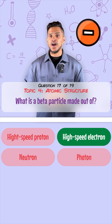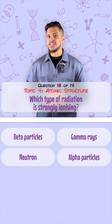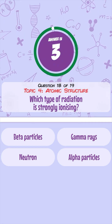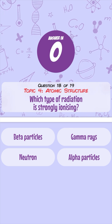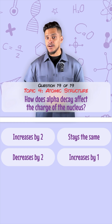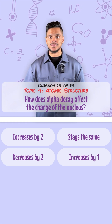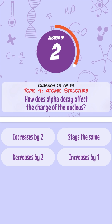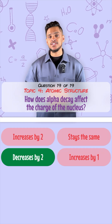What's a beta particle made out of? It's made out of a high-speed electron. Which type of radiation is strongly ionizing? That's an alpha particle. How does alpha decay affect the charge of a nucleus? It causes it to decrease by 2.